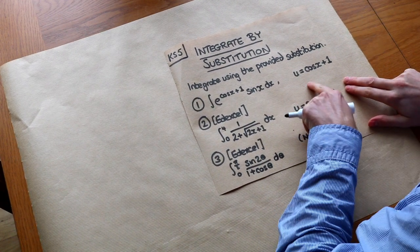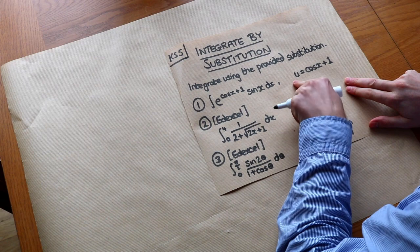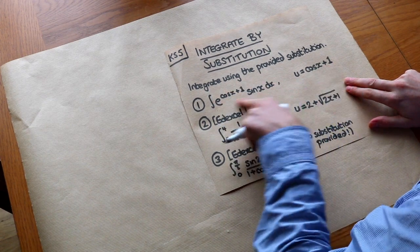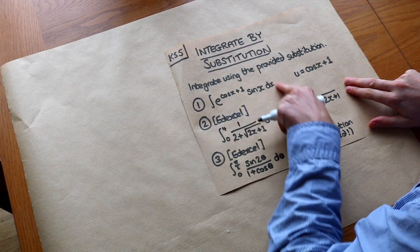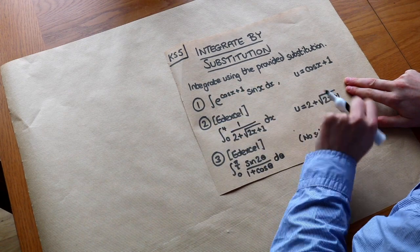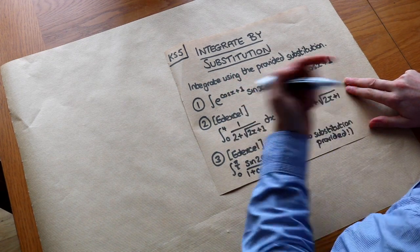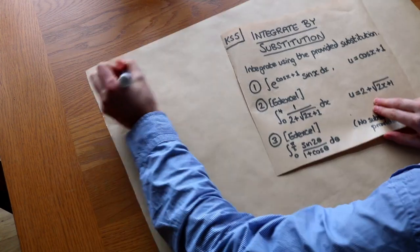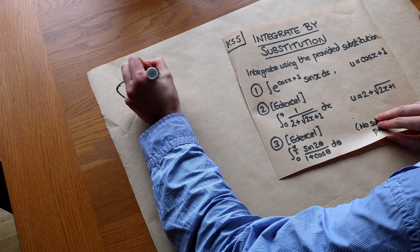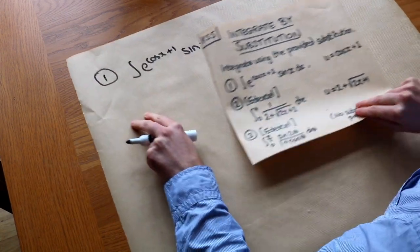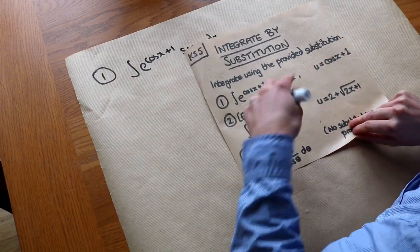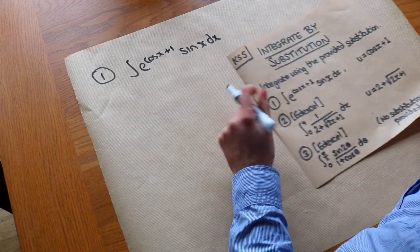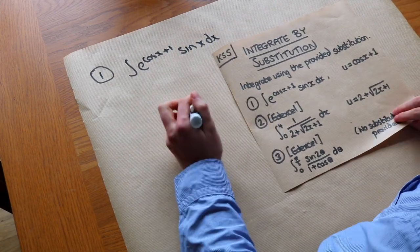So if we use a substitution like u equals cos of x plus 1, we can get the whole integration in terms of u instead of x and end up with something simpler. Usually you're given the substitution, but we'll also explore questions where we're not given it and look at a suitable way to come up with one yourself.